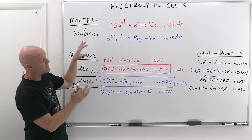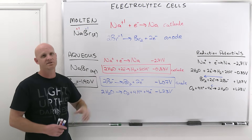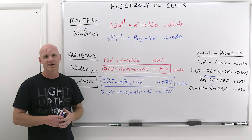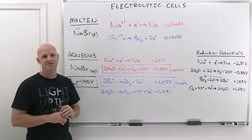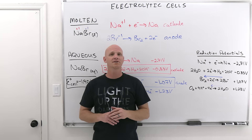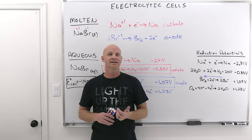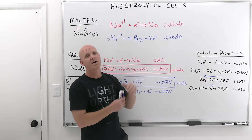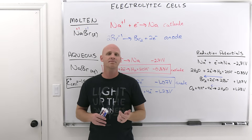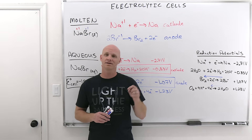Now that we've learned how to predict the products of electrolysis — both molten and aqueous — in the next lesson we're going to predict how much of a product is created over time in one of these electrolysis reactions. If you found this lesson helpful, a like and a comment are pretty much the best things you can do to support the channel. If you're looking for general chemistry practice, final exam rapid reviews, or practice final exams, take a look at my general chemistry master course — a free trial is available, I'll leave a link in the description.